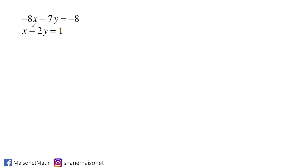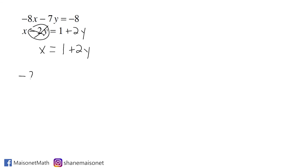So I'm going to take this equation and isolate the x variable. I take this minus 2y and write that term as its inverse on the other side, which leaves us with just x equals 1 plus 2y. Now that we know what x is equal to, we're going to substitute it in for x in the other equation — rewriting it as negative 8 times, in parentheses, 1 plus 2y, then subtract 7y, set equal to negative 8.